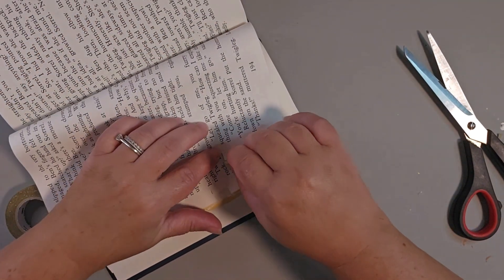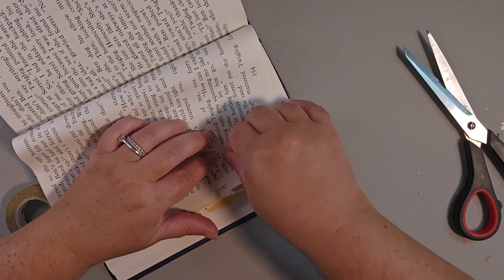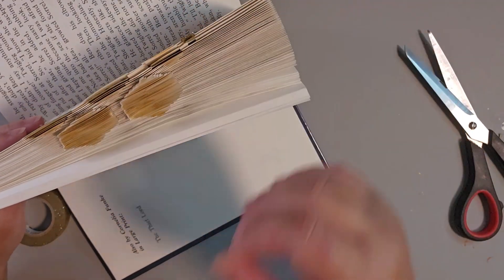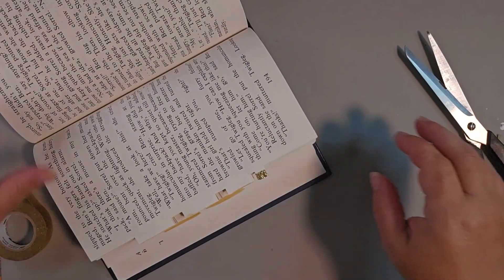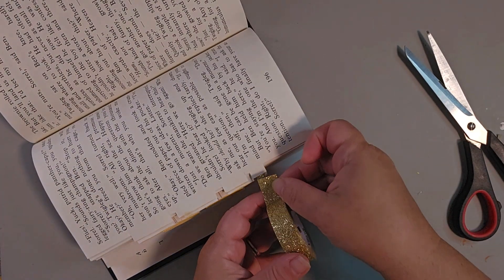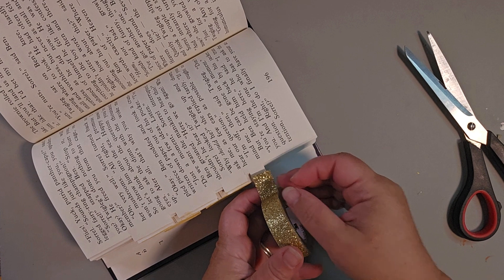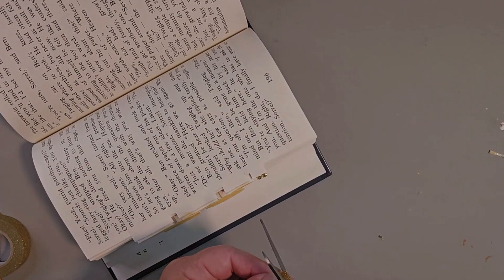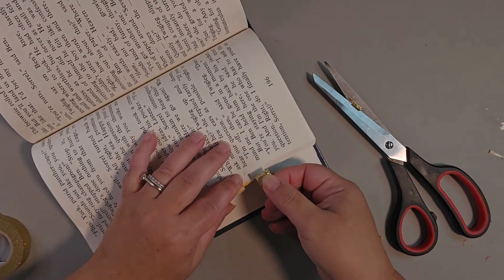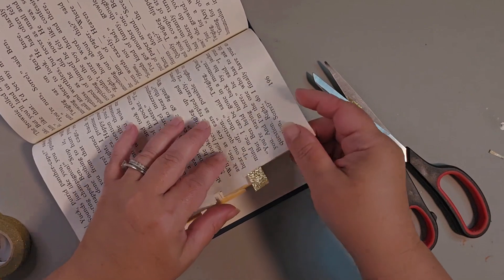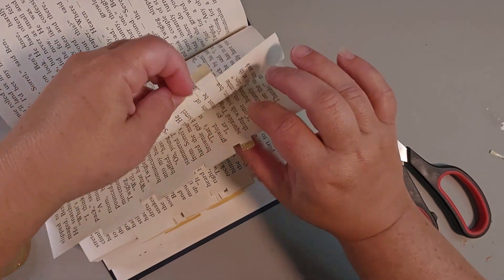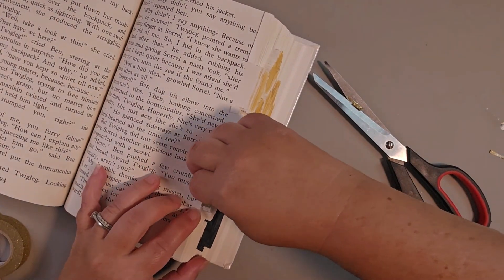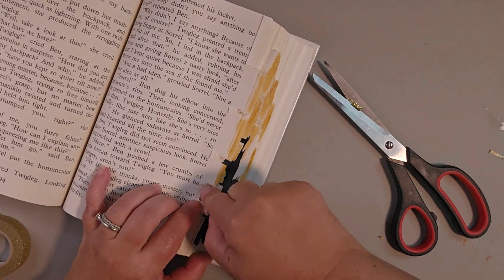This one happened to be the exact size. The washi tape will add a lot of bulk, so just be aware it is a little bit of a thicker process. Now my tabs are getting a little bit bigger. You notice it's a lot of juggling of the book in different angles to get it just right. But it's a very effective technique.